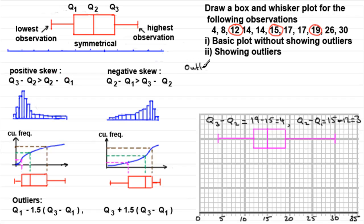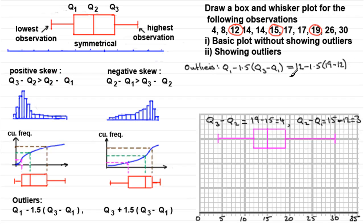For the lower outlier boundary, we calculate Q1 minus 1.5 times the interquartile range: 12 minus 1.5 times (19 minus 12), which gives us 4.5. The value of 4 is less than 4.5, so this value of 4 is an outlier. Outliers are marked with a cross, so we put 4 here as an outlier.